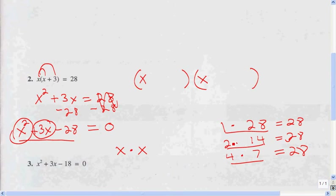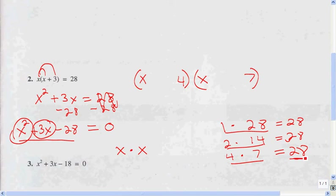When I add or subtract 14, I don't get 3. When I add or subtract 1 and 28, I don't get 3. But when I subtract 4 and 7, I get 3. So those are my factors: 4 and 7. When I multiply them, I get my third term, and when I add or subtract them, I get my middle term.